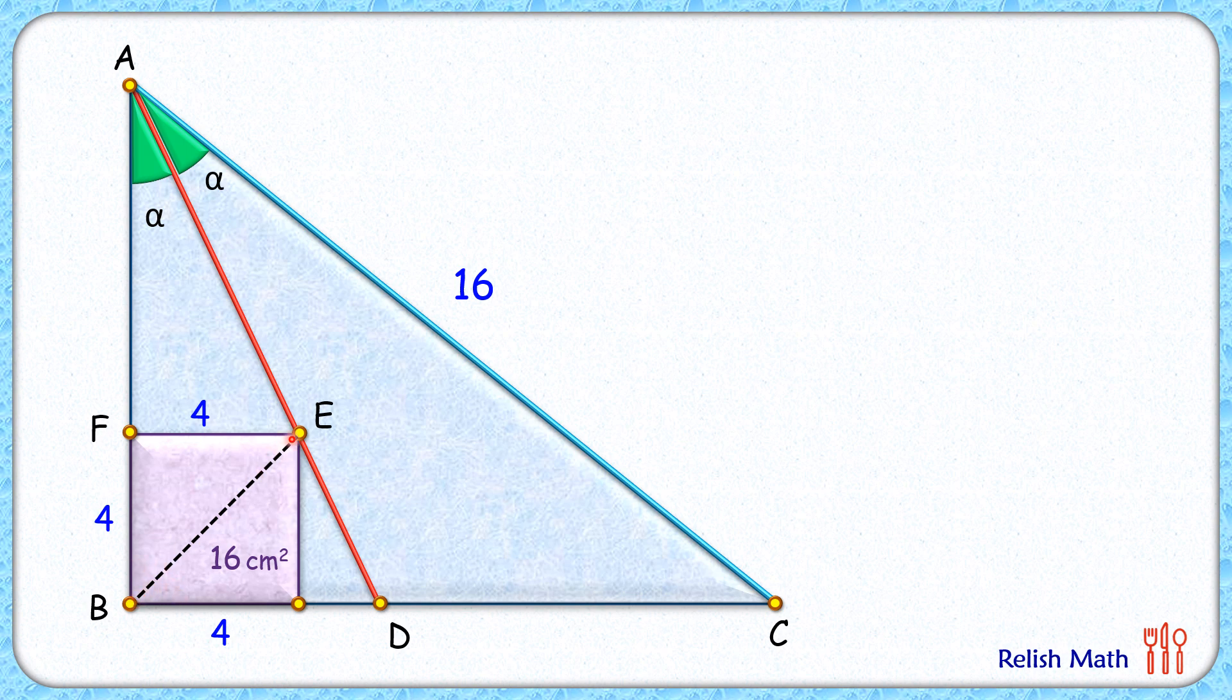Thus BE is also an angular bisector, and AE is also an angular bisector. We know that angular bisectors meet at the incenter, so point E is the incenter for an incircle with radius 4 centimeters.